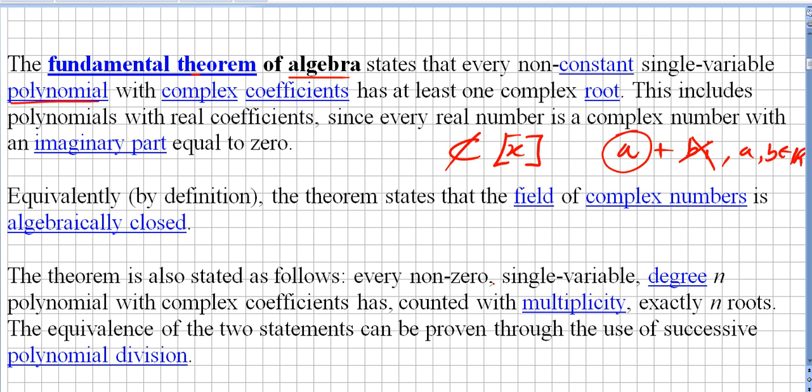The theorem is also stated as follows: every nonzero single variable degree n polynomial with complex coefficients has, counted with multiplicity, exactly n roots. The equivalence of the two statements can be proven through the use of successive polynomial division.